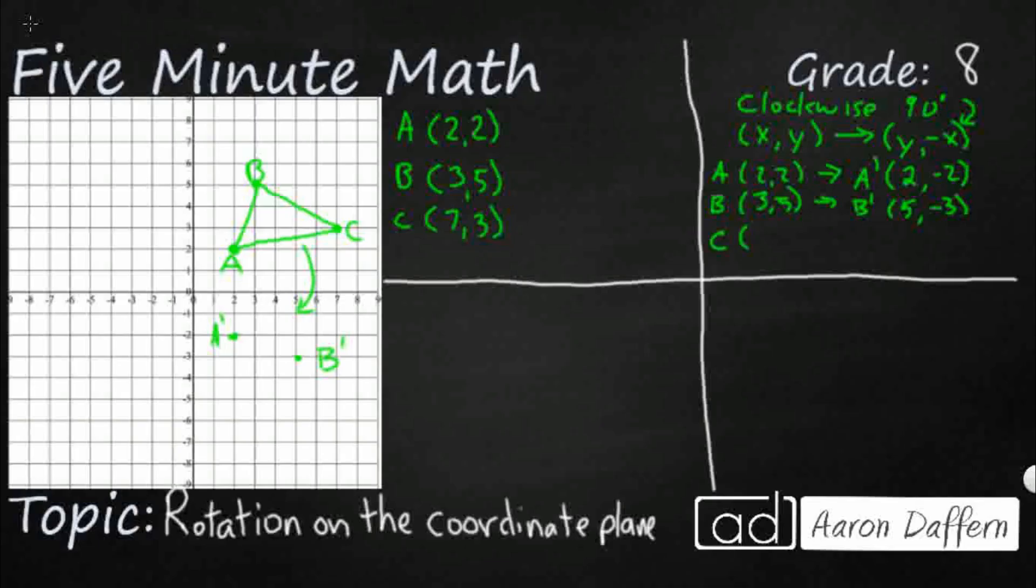And then we've got C. And so we're going to follow that same pattern. 7, 3 becomes C prime. The y becomes the new x. X becomes the new y, but you make it negative 3, negative 7. So all the way down here. So this is C. And you notice how we have the same exact triangle.